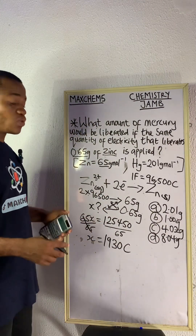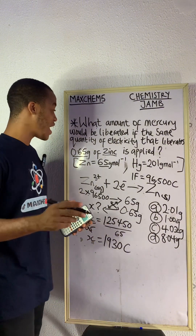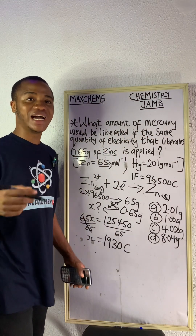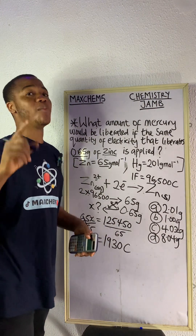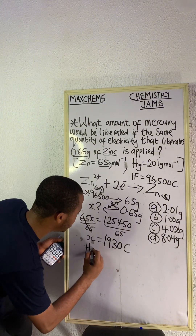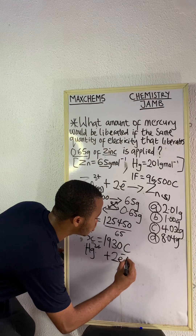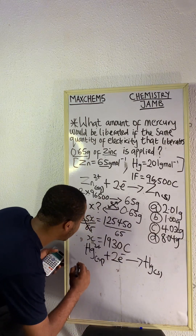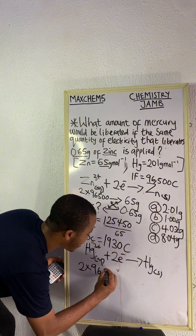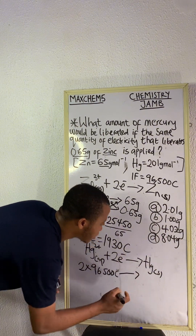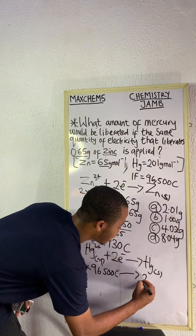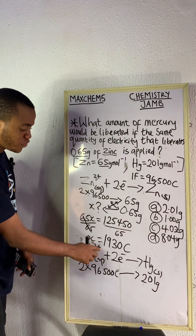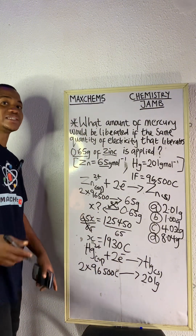Now that we have gotten the quantity of electricity that will liberate 0.65 grams of zinc, we need to relate that amount of electricity to mercury. The charge of mercury is also 2+. Mercury is Hg, so the equation is: Hg²⁺ plus two electrons gives us mercury solid. This is also 2 × 96,500 coulombs — that is, two Farads — and one Farad is 96,500 coulombs. I like converting to coulombs always.